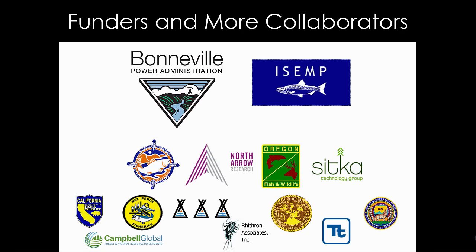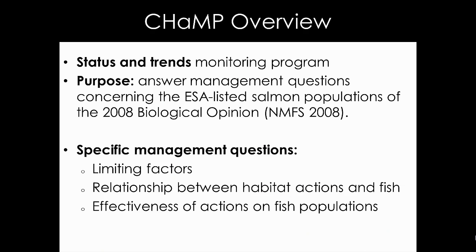Bonneville Power Administration has funded this project. The CHAMP protocol grew out of ISEMP, which is the Integrated Status and Effectiveness Monitoring Program — also a NOAA and BPA collaborative project. ISEMP started back in 2004 and there are a whole slew of other collaborators including tribal entities, state agencies, and other consulting firms. Today I'm going to give you a brief overview of CHAMP, specifically the protocol and its objectives.